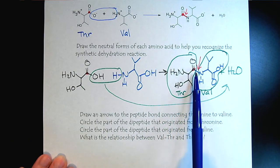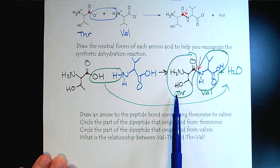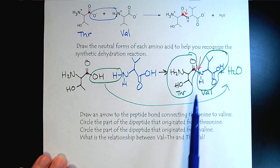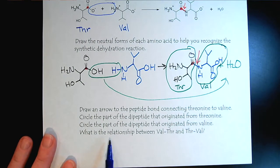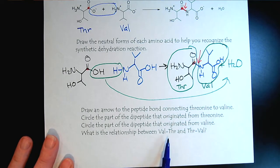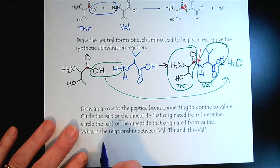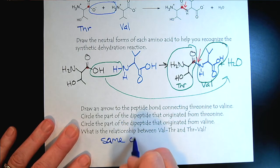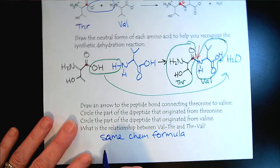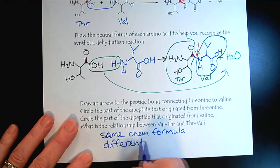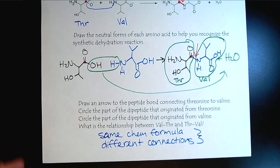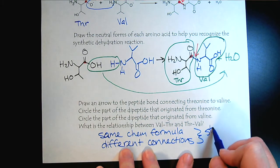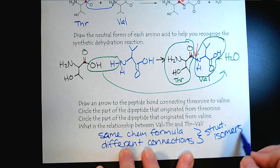Looking at our to-do list, we've drawn an arrow to the peptide bond connecting the two amino acids and we've circled each of the amino acid components creating the dipeptide. For a brief review, what term would we use to describe the relationship between valine-threonine and threonine-valine dipeptides? They have the same chemical formula, however the connections are different - different bonding, different connection between atoms. So they're structural isomers or constitutional isomers.